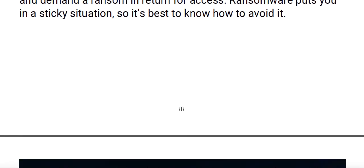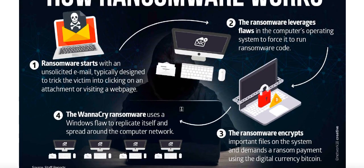Let's discuss how ransomware works with an example. It starts with an unsolicited email — it basically tricks you into clicking on a particular email or link. As soon as you click on those URLs, some macros or executable files get executed on your system. Ransomware starts with an unsolicited email typically designed to trick the victim into clicking on an attachment or visiting a web page that is infected.